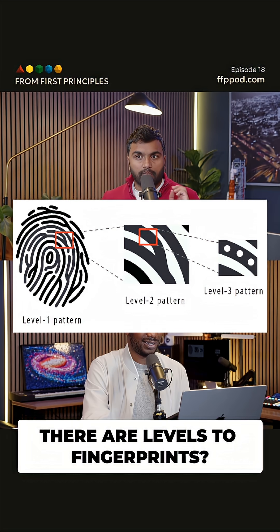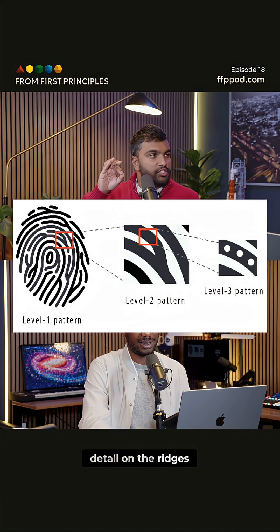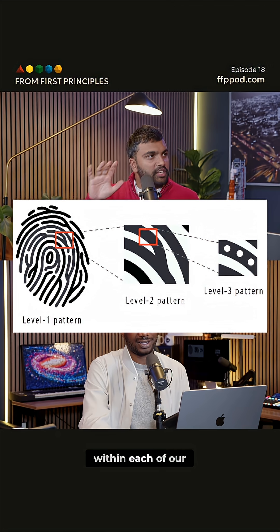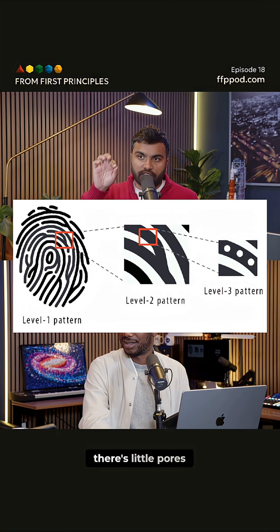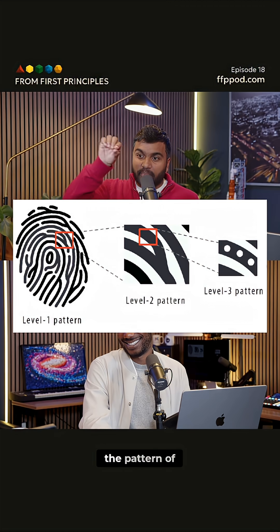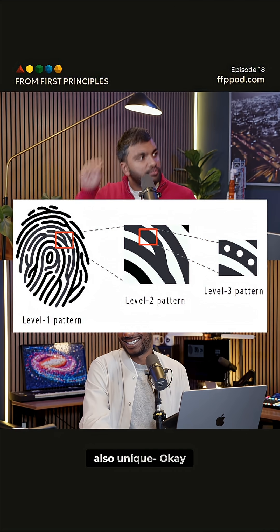I didn't know this about fingerprints. With fingerprints, there's a level one pattern, which is the fingerprint itself. The level two pattern is the detail on the ridges. And the level three pattern is within each of our ridges — there's little pores. That's crazy. The pattern of those pores is also unique to each individual.